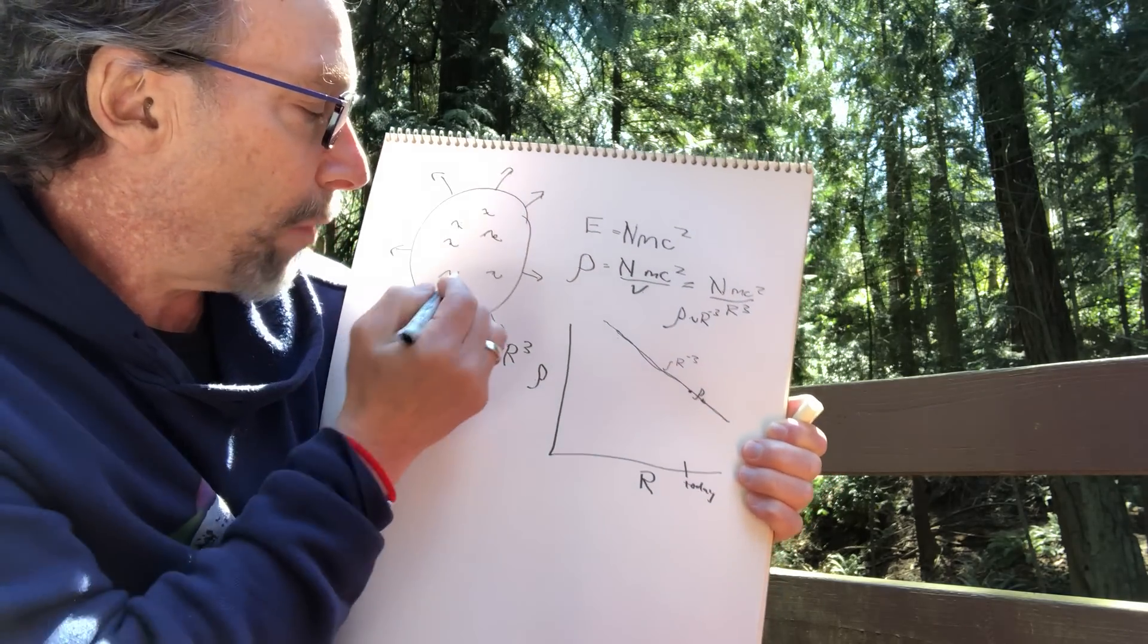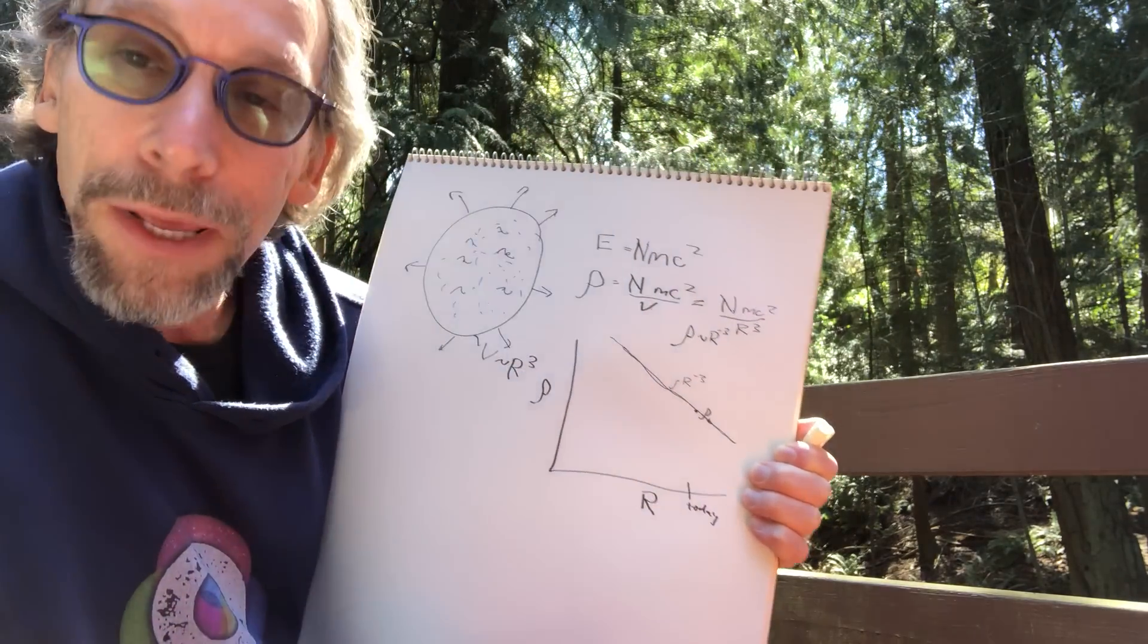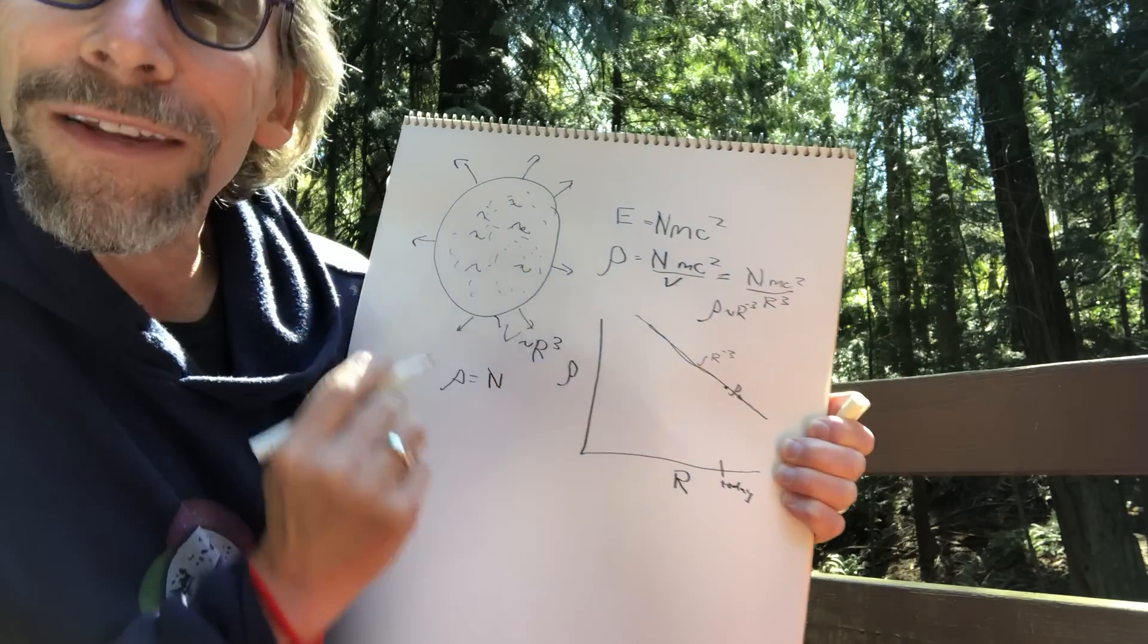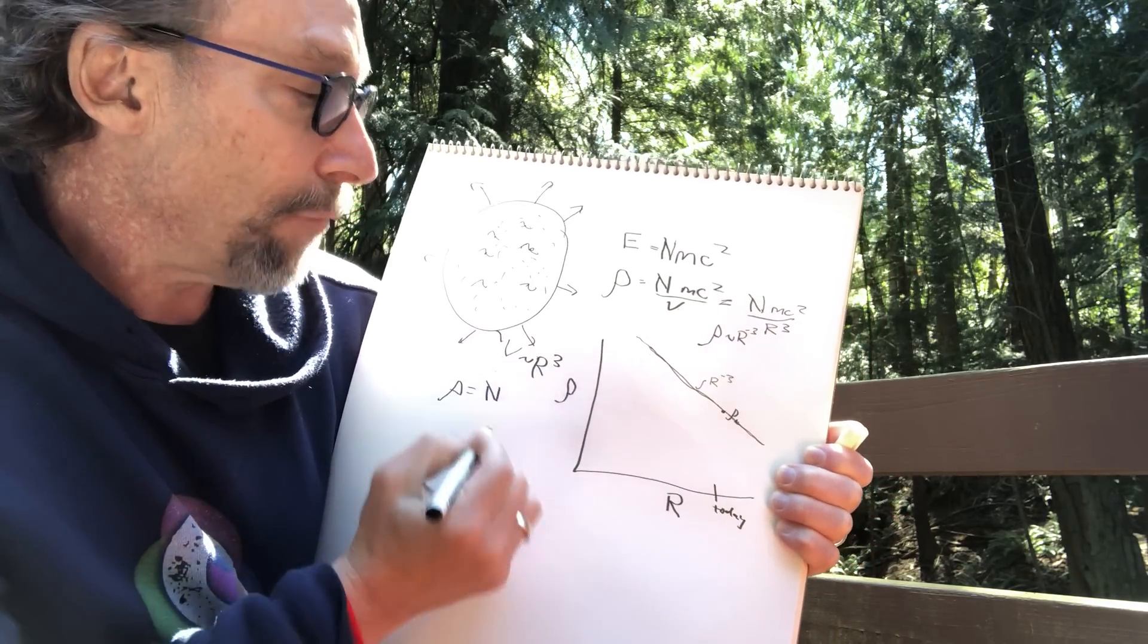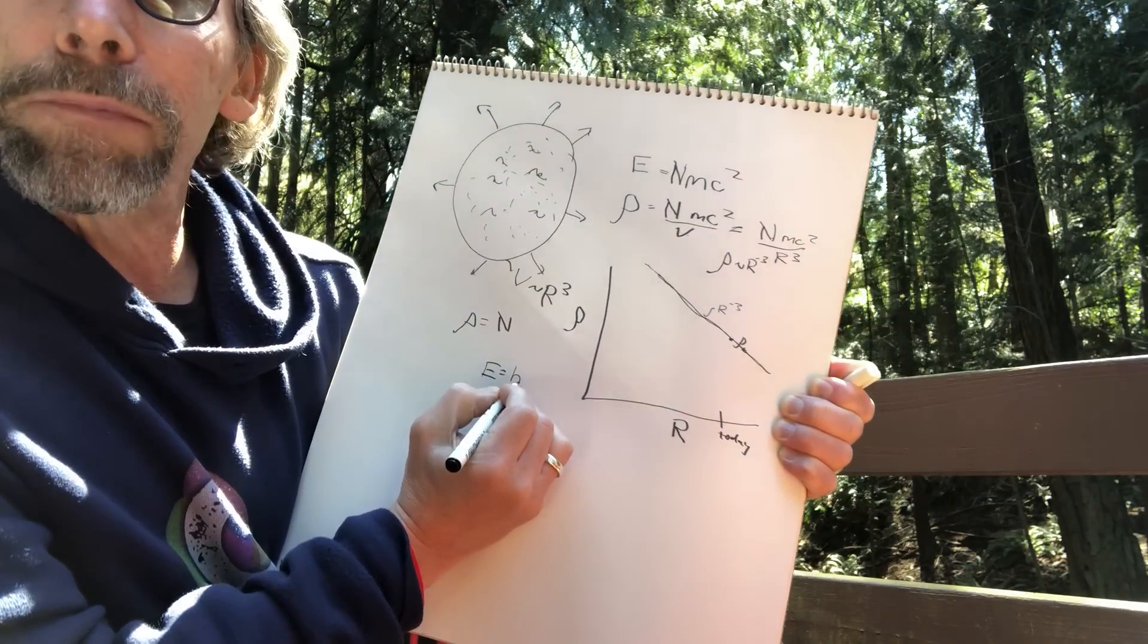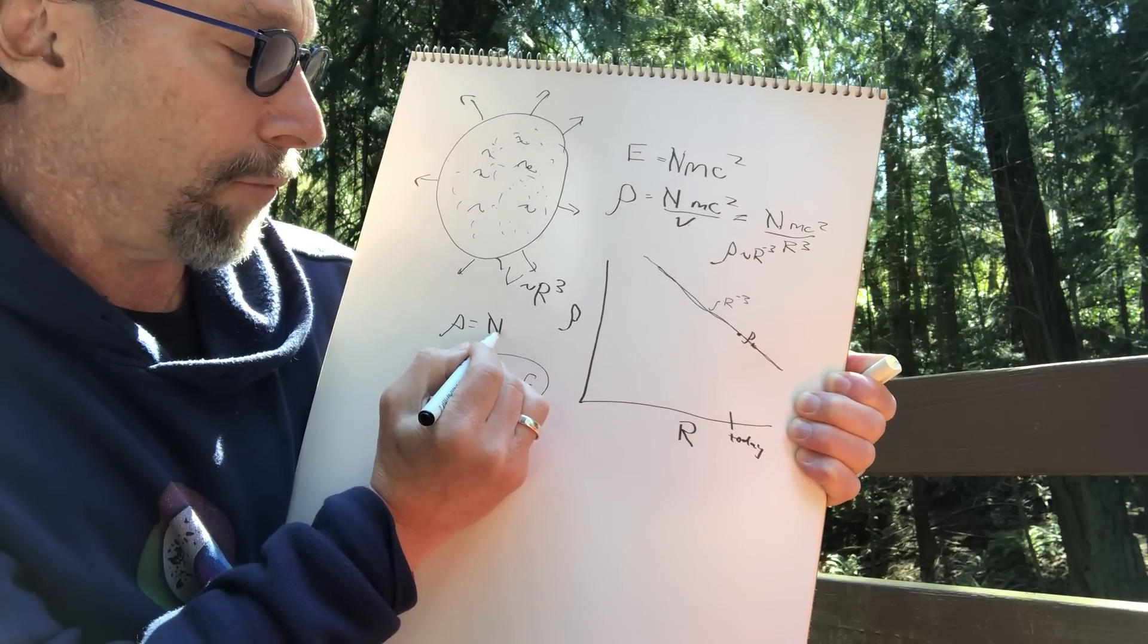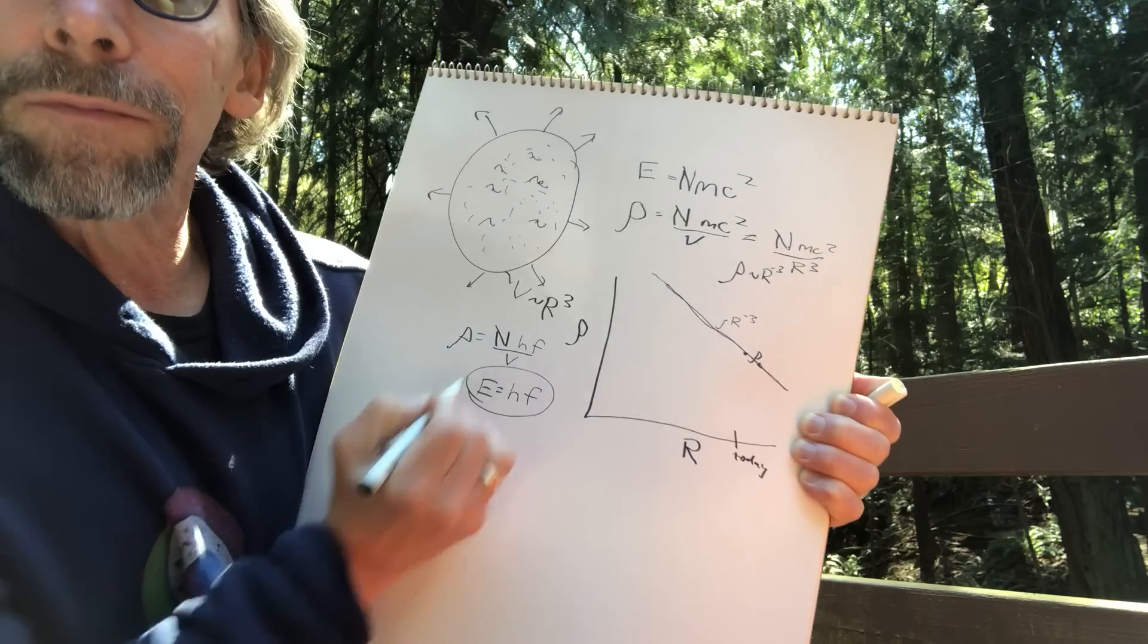What about the other density in the universe? The universe is full of radiation all throughout space. That radiation is made of particles called photons, so we could calculate the energy density of radiation the same way. The energy density of radiation is the number of photons times the energy per photon. We know from Einstein and Planck in quantum mechanics that for every given photon of light, the energy of that particle is some constant, Planck's constant, times the frequency of the light. That's the fundamental quantum concept.